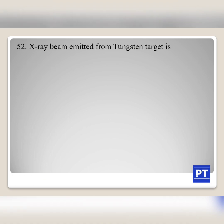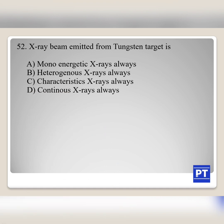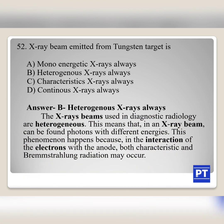Question No. 52: X-ray beam emitted from a tungsten target is: Option A monoenergetic X-rays always, Option B heterogeneous X-rays always, Option C characteristic X-rays always, Option D continuous X-rays always. The answer is Option B, heterogeneous X-rays always. X-ray beams used in diagnostic radiology are heterogeneous, meaning photons with different energies are found in the beam. This occurs because in the interaction of electrons with the anode, both characteristic and bremsstrahlung radiation may occur — bremsstrahlung radiation is otherwise known as braking radiation. More about X-ray production has been discussed in my previous session.